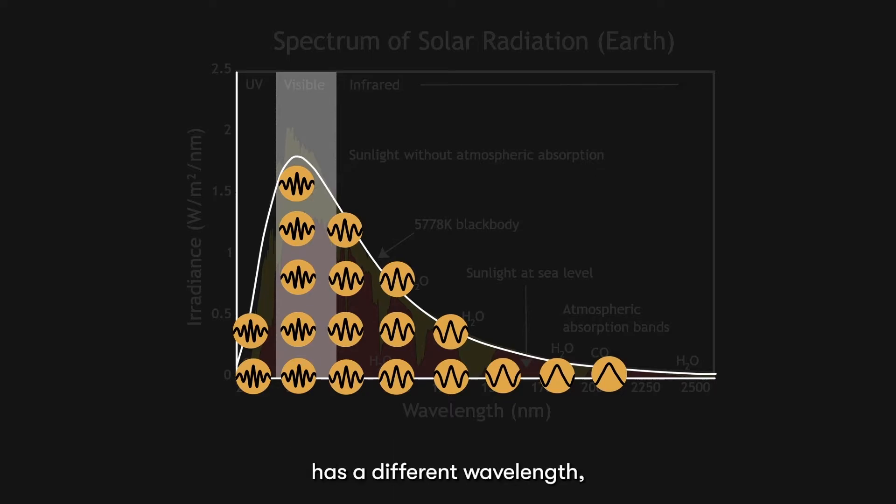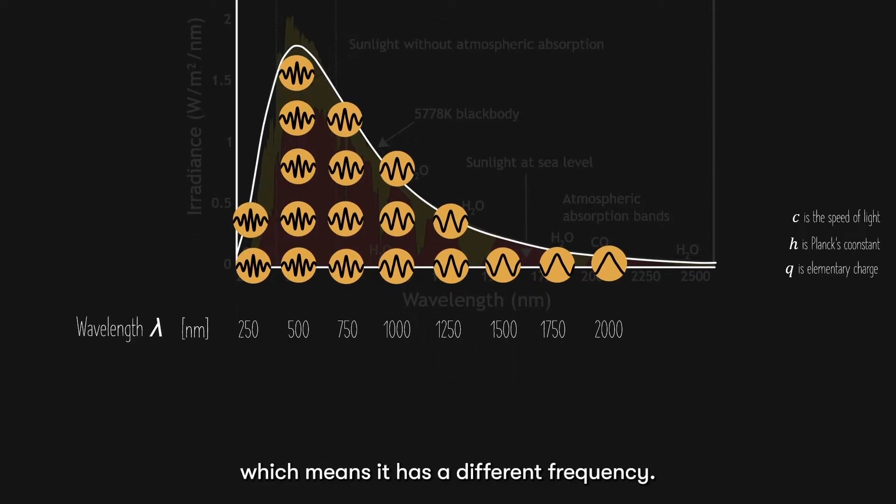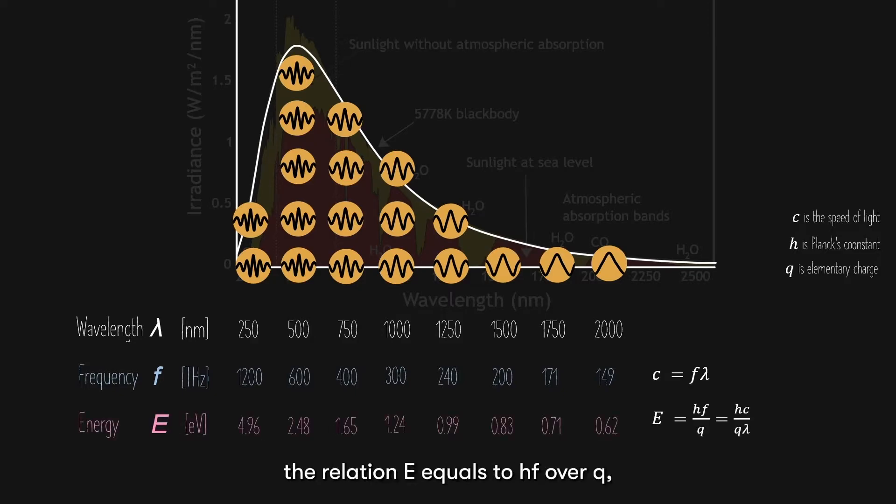We know that each photon has a different wavelength, which means it has a different frequency. Wavelength and frequency are related via the equation c equals to f lambda, where c is the speed of light. The wavelength or frequency of a photon can be related to the energy of the photon via the relation E equals to hf over q, or hc over q lambda, where h is the Planck's constant and q is the elementary charge.